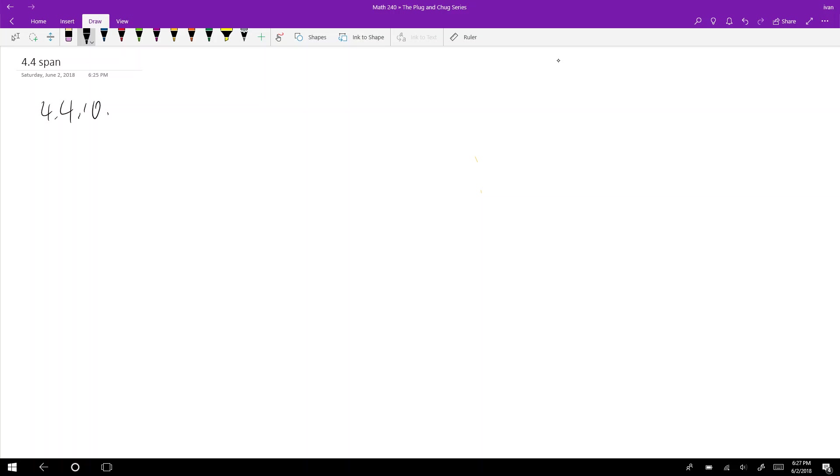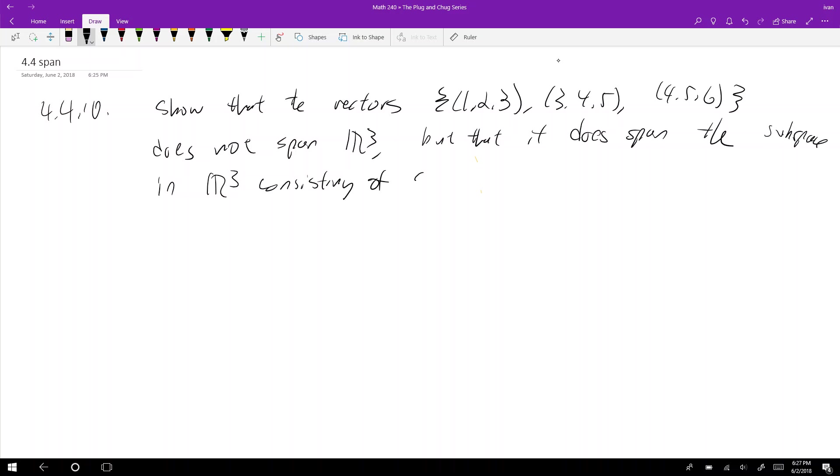Let's go to the first problem, from textbook 4.4.10. This problem asks: show that the vectors (1,2,3), (3,4,5), (4,5,6) does not span R3, but that it does span the subspace of R3 consisting of all vectors lying in the plane x minus 2y plus z equals 0.